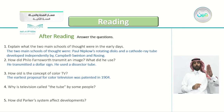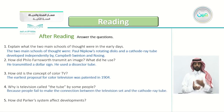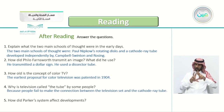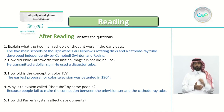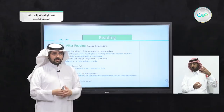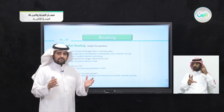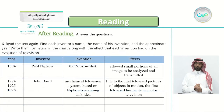Question four: why is television called 'the tube' by some people? The answer: because people fail to make the connection between the television set and the cathode ray tube. Question five: how did Parker's system affect developments? He made television cost-effective, focusing on the cost so that televisions became affordable for most people.